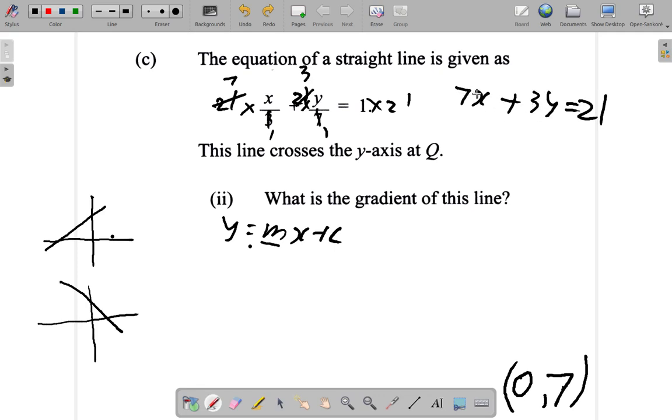Then, if I subtract 7x from both sides, 7x minus 7x, that would be gone and only 3y is left, equals 21 minus 7x. So, 21 minus 7x. We could have this as 3y equals negative 7x plus 21, when we rewrite the right hand side.